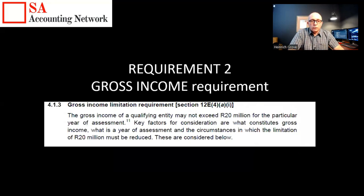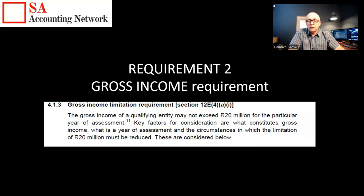The second requirement is the gross income requirement. The turnover of the business is not allowed to be more than R20 million, because once it's more than R20 million, you're no longer considered a small business — you fall into a different category and therefore can't use these lower tax rates.